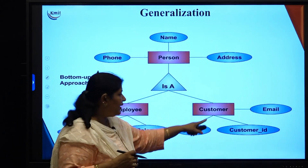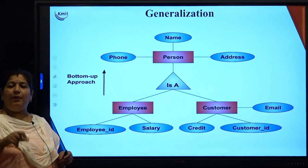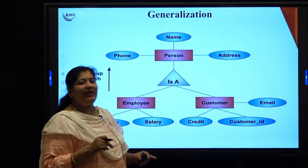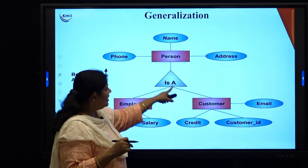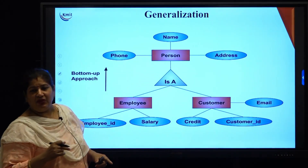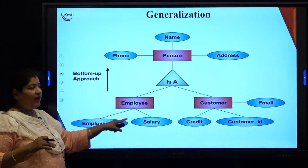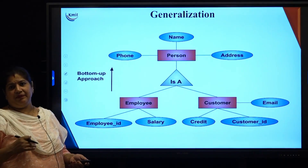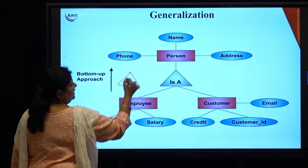For example, employee and customer are two people related in a particular organization. In general, both of them are persons, so we can generalize this using a bottom-up approach — person. The person entity has common features, while the lower-level entities have specific identities. Generalization is represented with a triangle symbol.